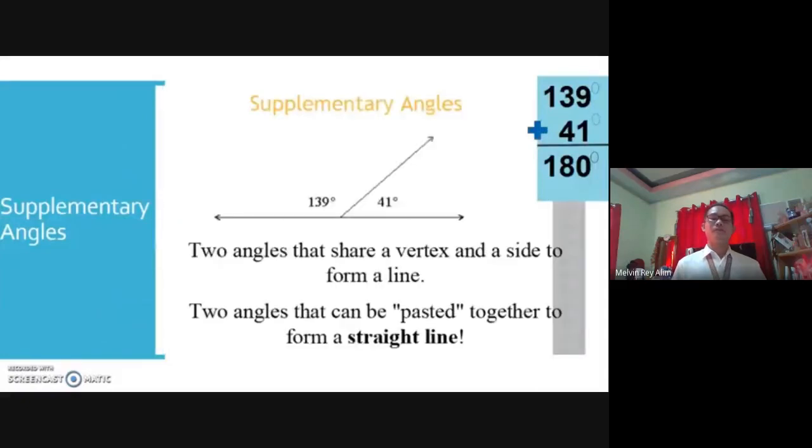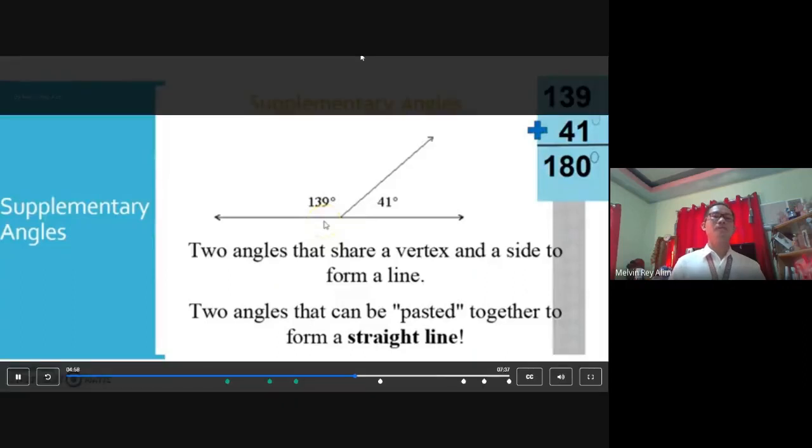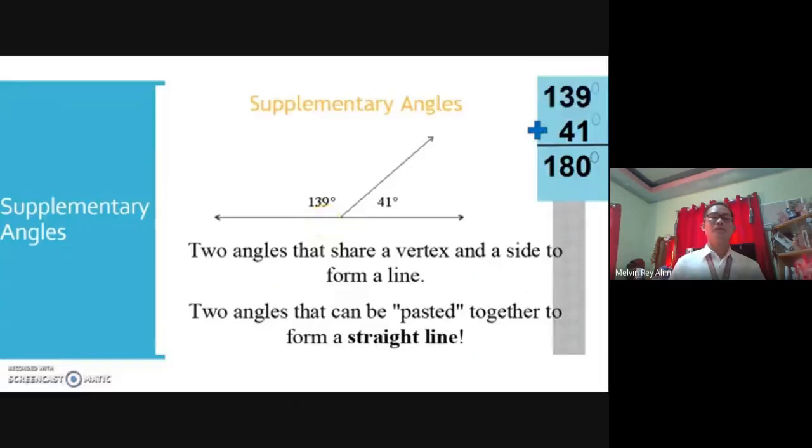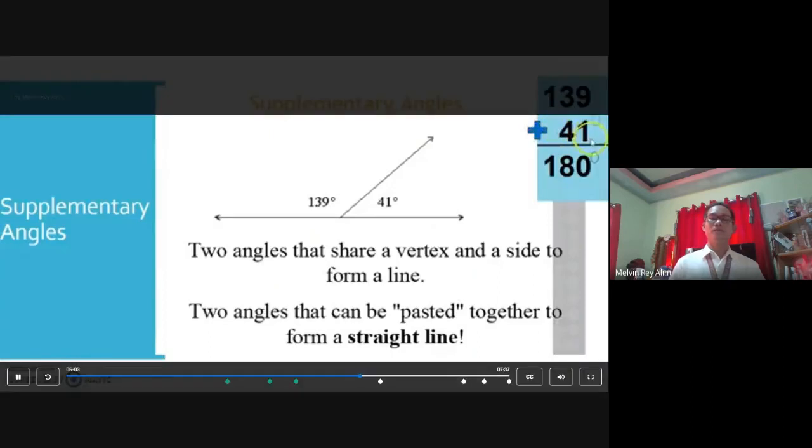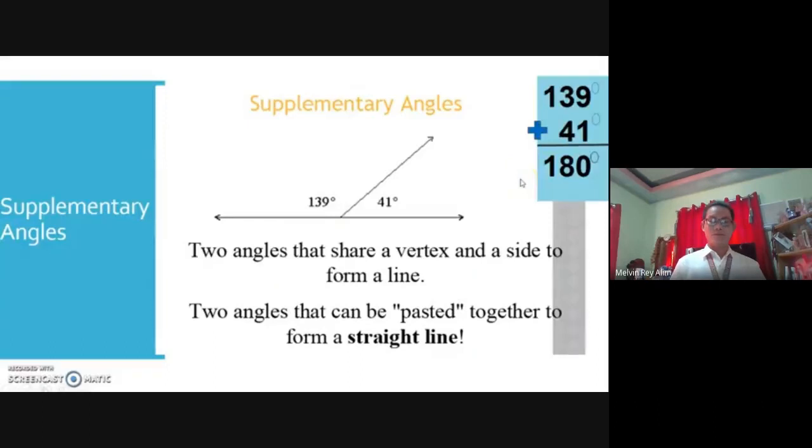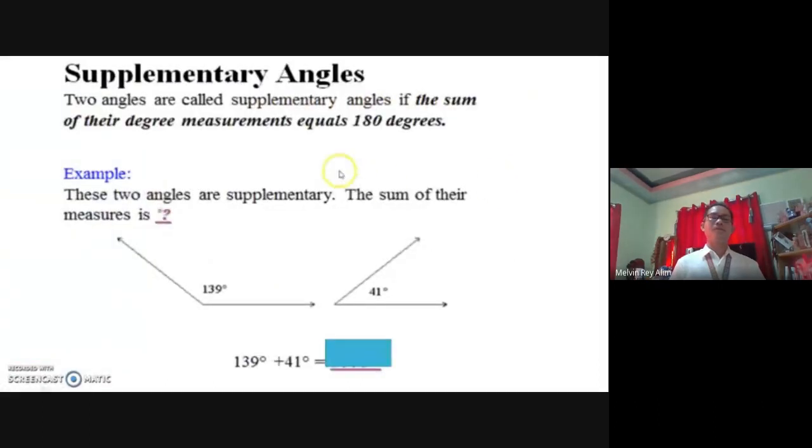Let's take a look at another example. These two angles, they share a vertex right here and a side to form the line. Two angles that can be pasted together to form a straight line of 180 degrees. 139 degrees plus 41 degrees equals 180 degrees. Again, here's another look at it. This time, the angles are not pasted together, but they are still supplementary because the sum of their measures 139 degrees plus 41 degrees.